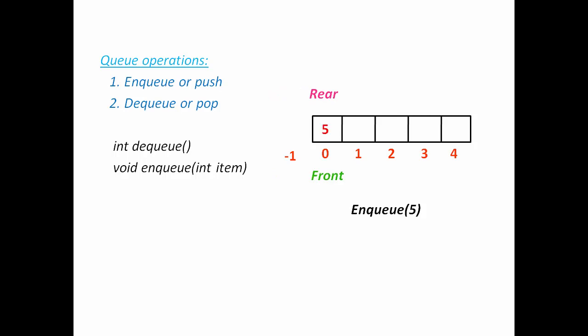So insert five at index zero. Now I am going to insert seven. Rear will increment by one. Now rear is at index one and front is zero. When we insert an element, only rear will increment by one. Front will be same. Now we insert seven at index one. Next I am going to insert six. Increment rear by one.